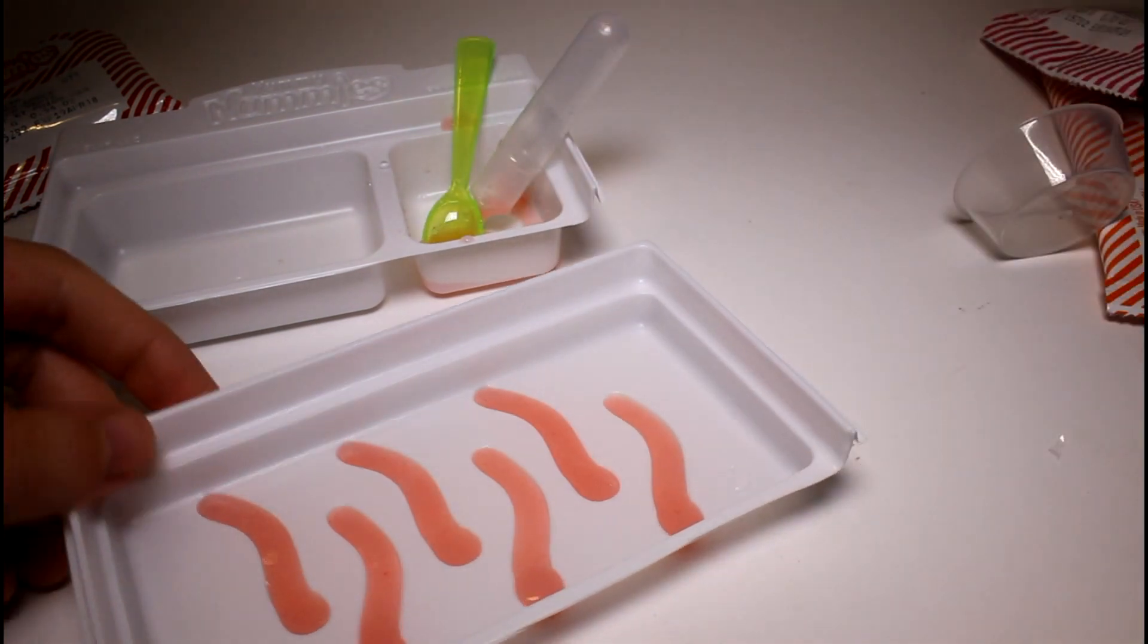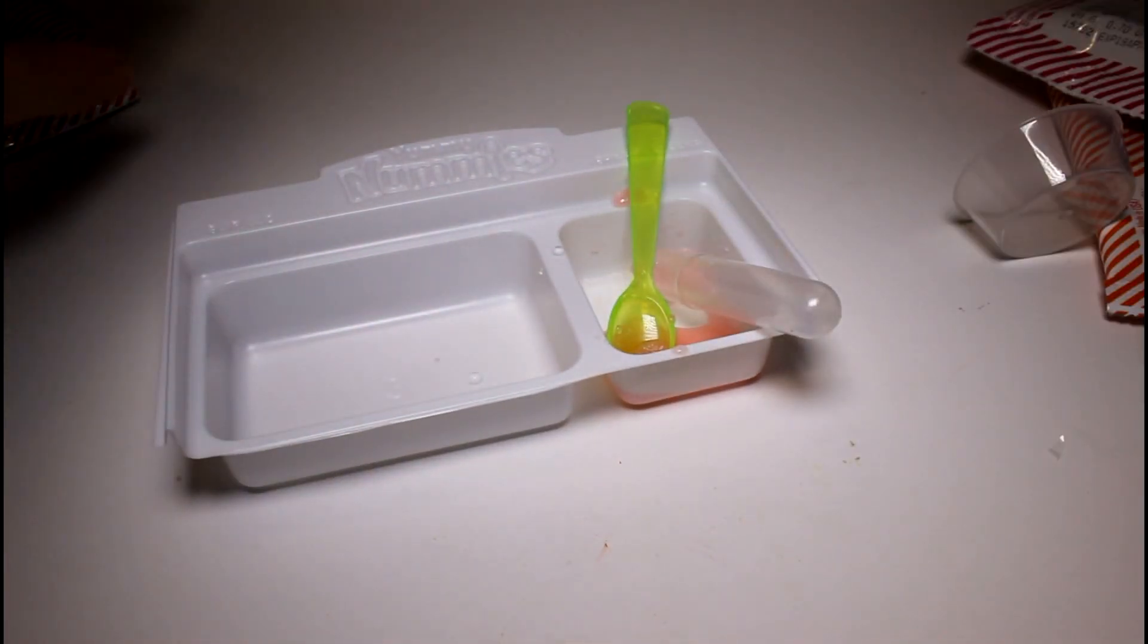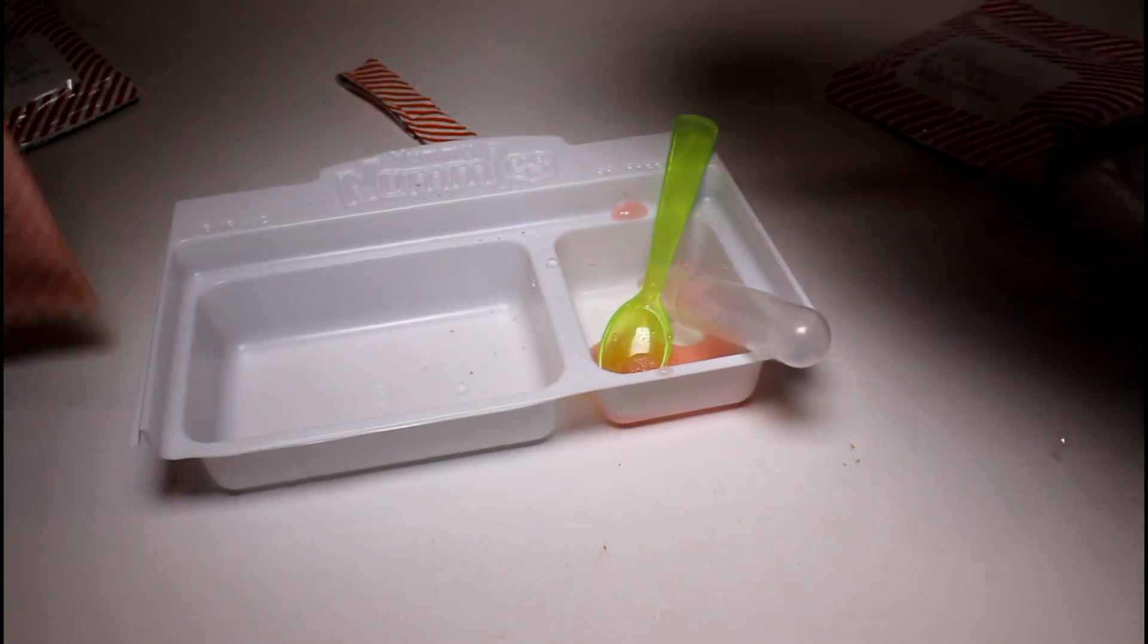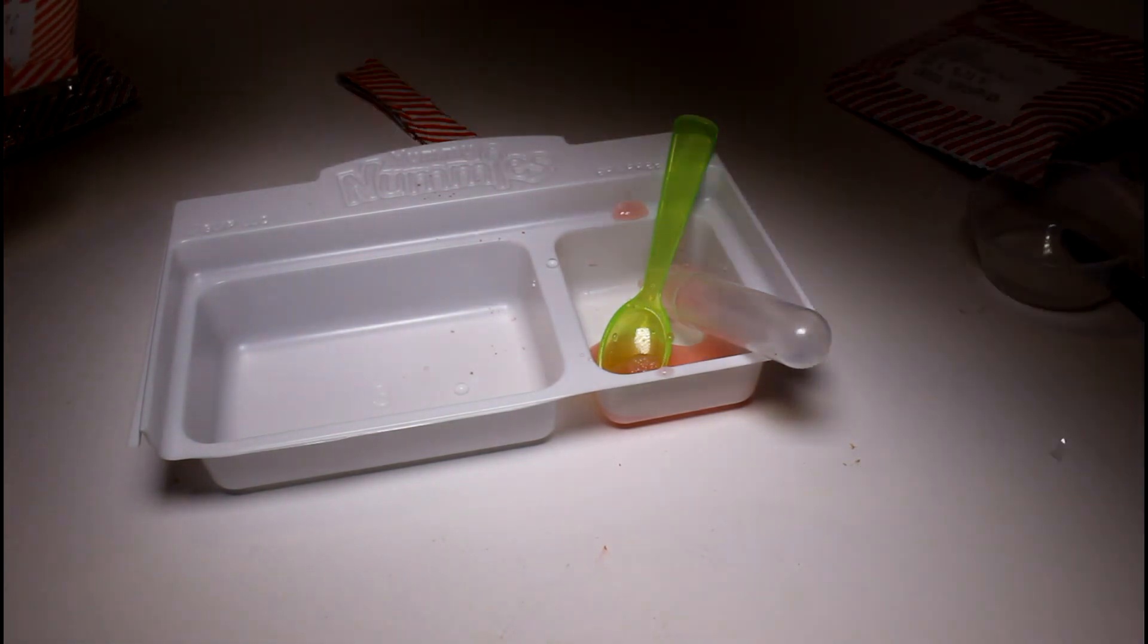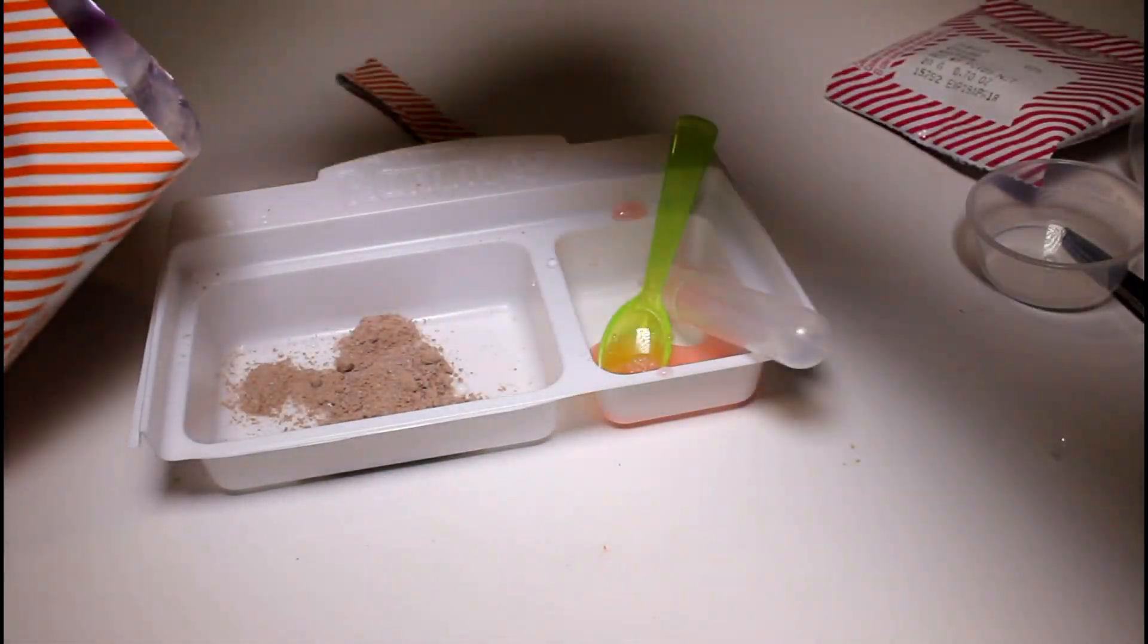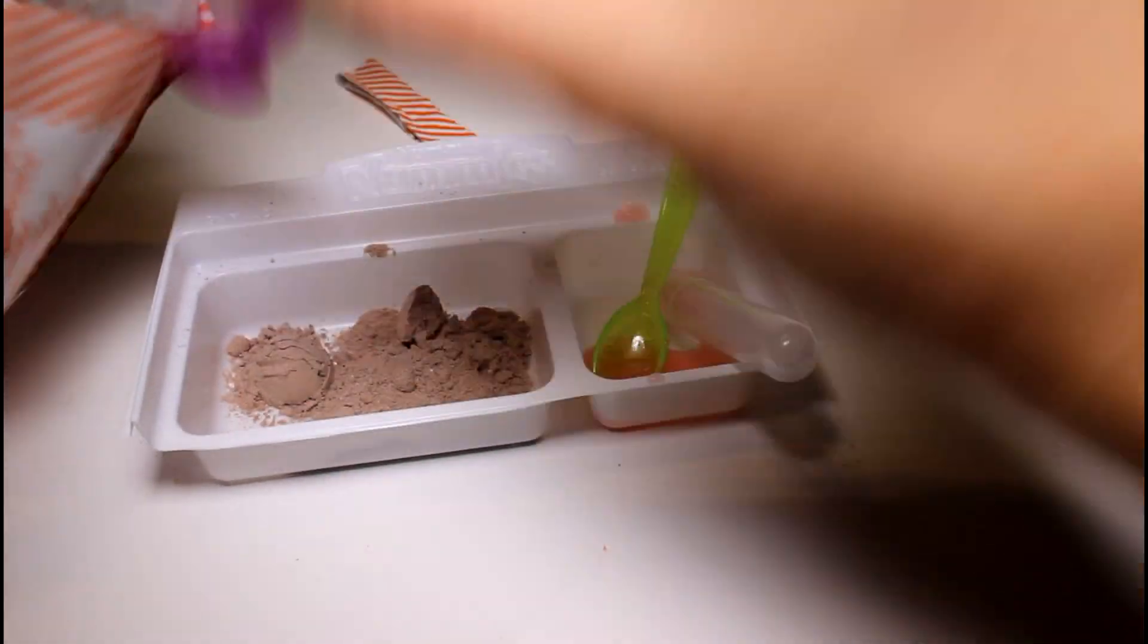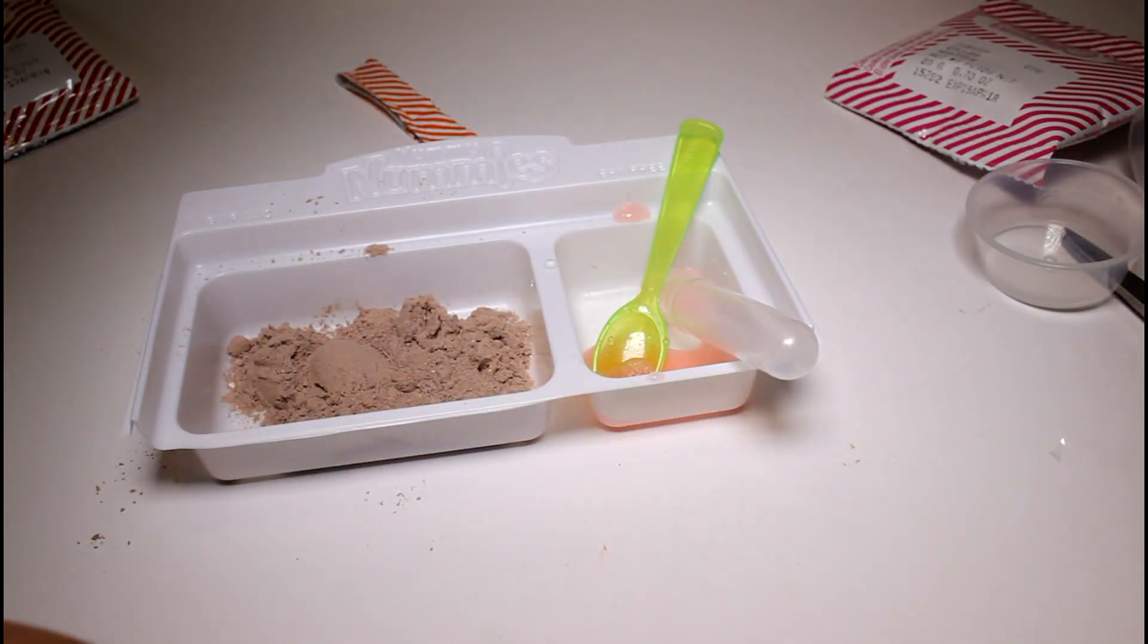Next we get to open the chocolate mousse. Where is that at? Here it is, a nice big giant packet. And we gotta get, where'd our scoop go? We have to add five round scoops. So one, two, three, four, and five.